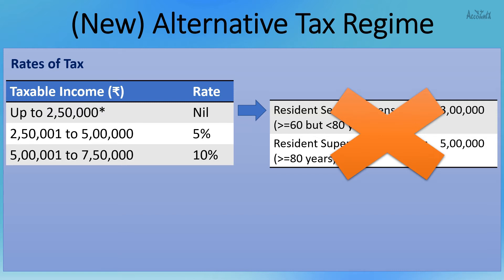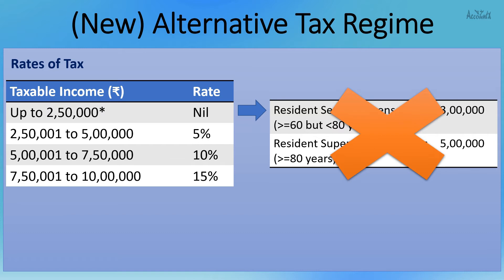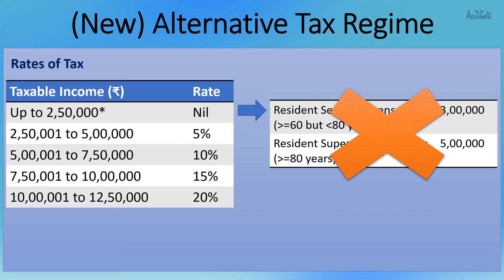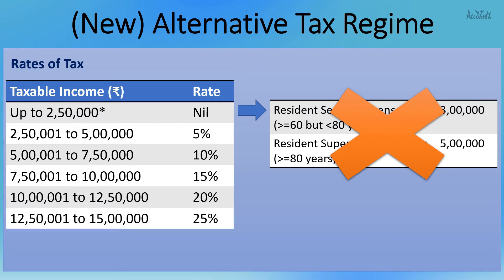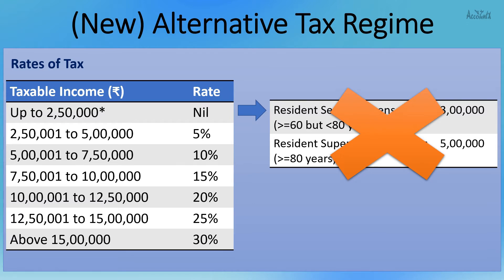For income more than 5 lakhs up to 7.5 lakhs, the rate is 10%. For income more than 7.5 lakhs up to 10 lakhs, it is 15%. Under the normal tax regime, income in the range of 5 to 10 lakhs was taxed at 20%, so the alternative tax regime has lower rates here. The next slabs are: 20% for 10 to 12.5 lakhs, 25% for 12.5 to 15 lakhs, and 30% above 15 lakhs — compared to a straight 30% above 10 lakhs in the normal regime.